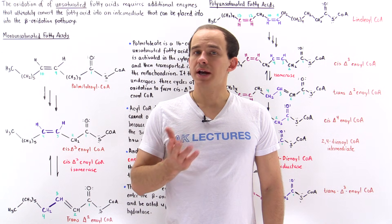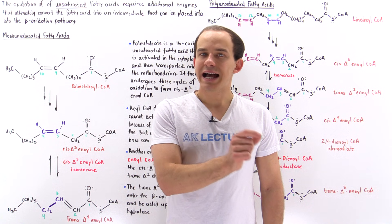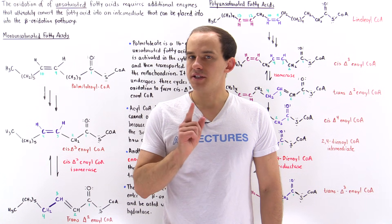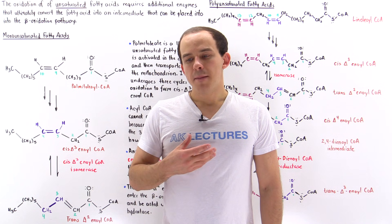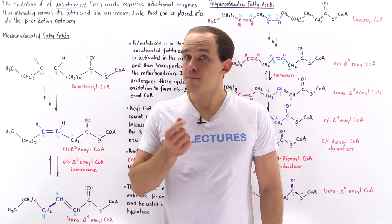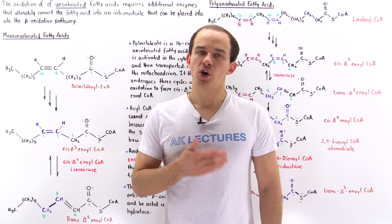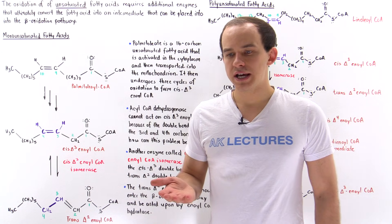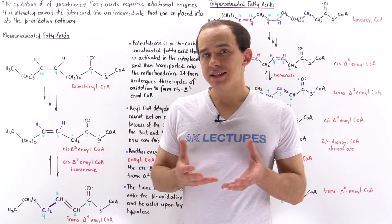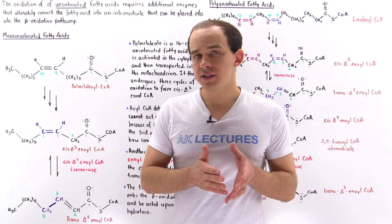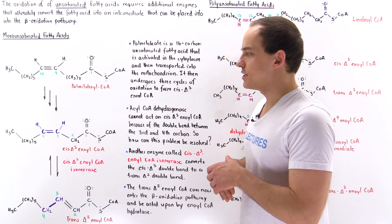So far in our discussion on the breakdown of fatty acids, we only really discussed the breakdown of saturated fatty acids — fatty acids that do not contain any double bonds. But our diet consists of many different types of fatty acids that do contain double bonds. So the next logical question is, how exactly can the cells of our body actually break down fatty acids that contain one or more double bonds? This will be the focus of this lecture.